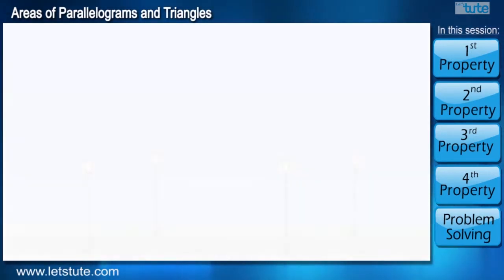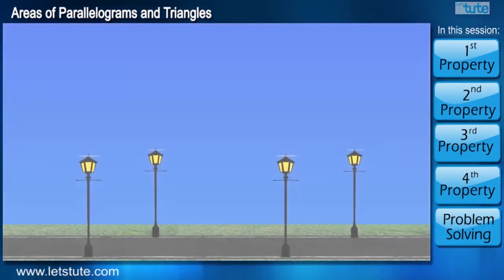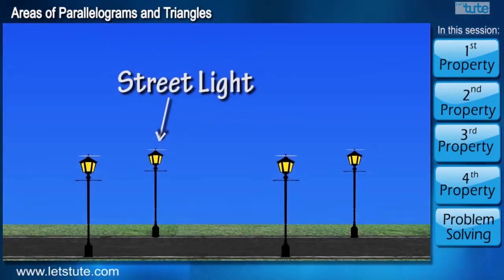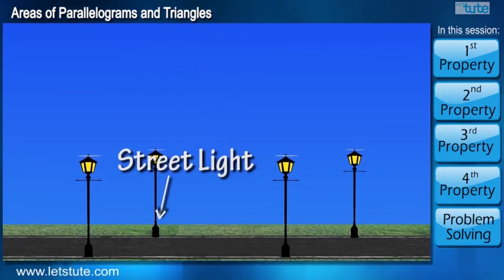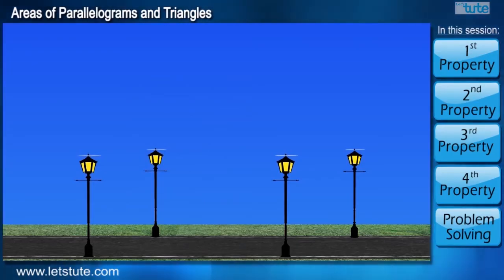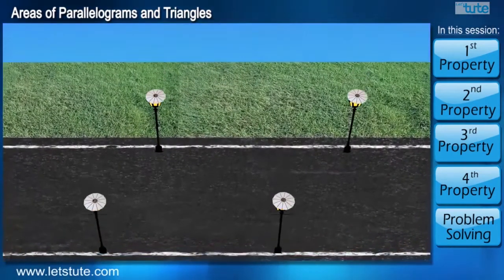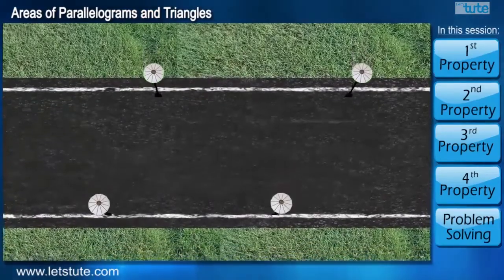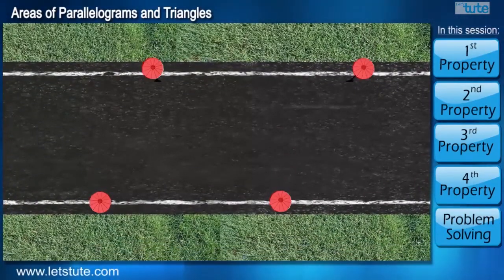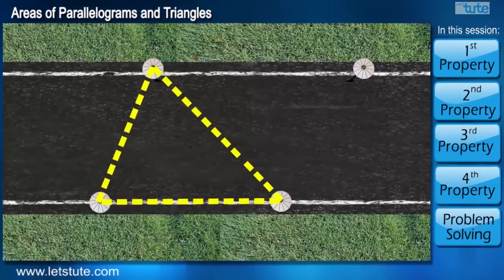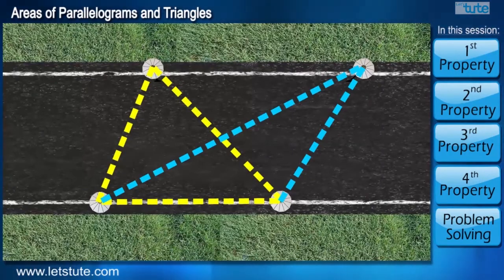Here you can see a road and on both sides of the road there are street lights. So using this situation, let's see what we can come up with. Consider there are two poles on both sides of this road and let's draw two triangles by joining these poles.